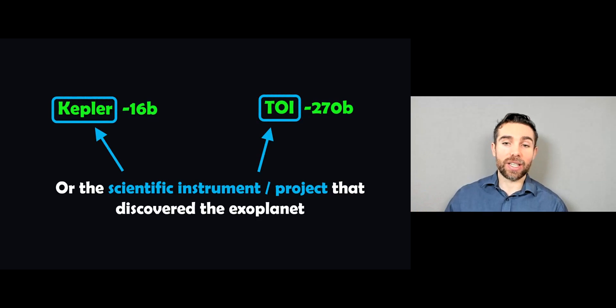The other way in which the first part of that name can be acquired is from the scientific instrument or project that discovered the exoplanet in the first place. So here you would have Kepler or TOI, which would be the TESS telescope.